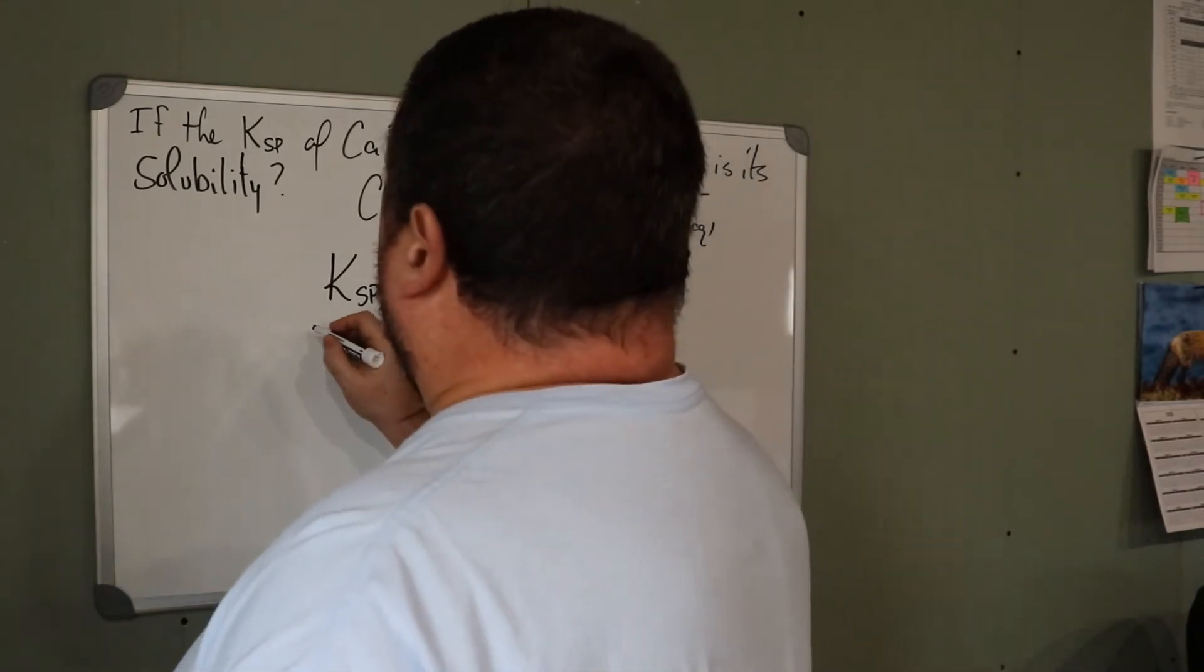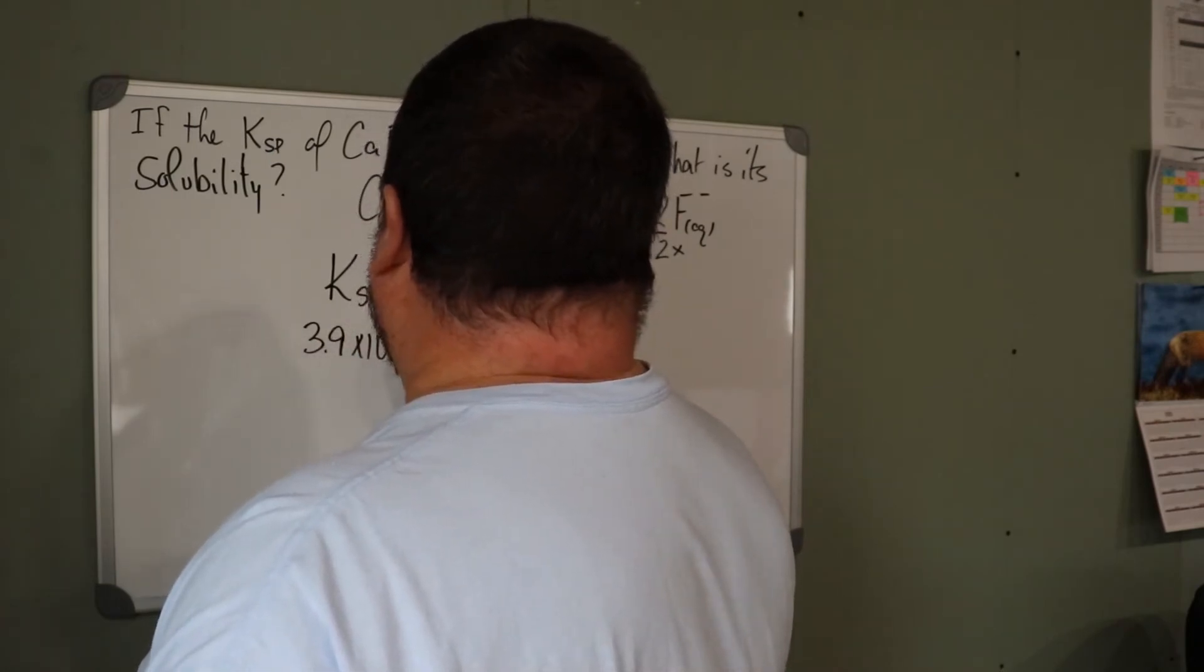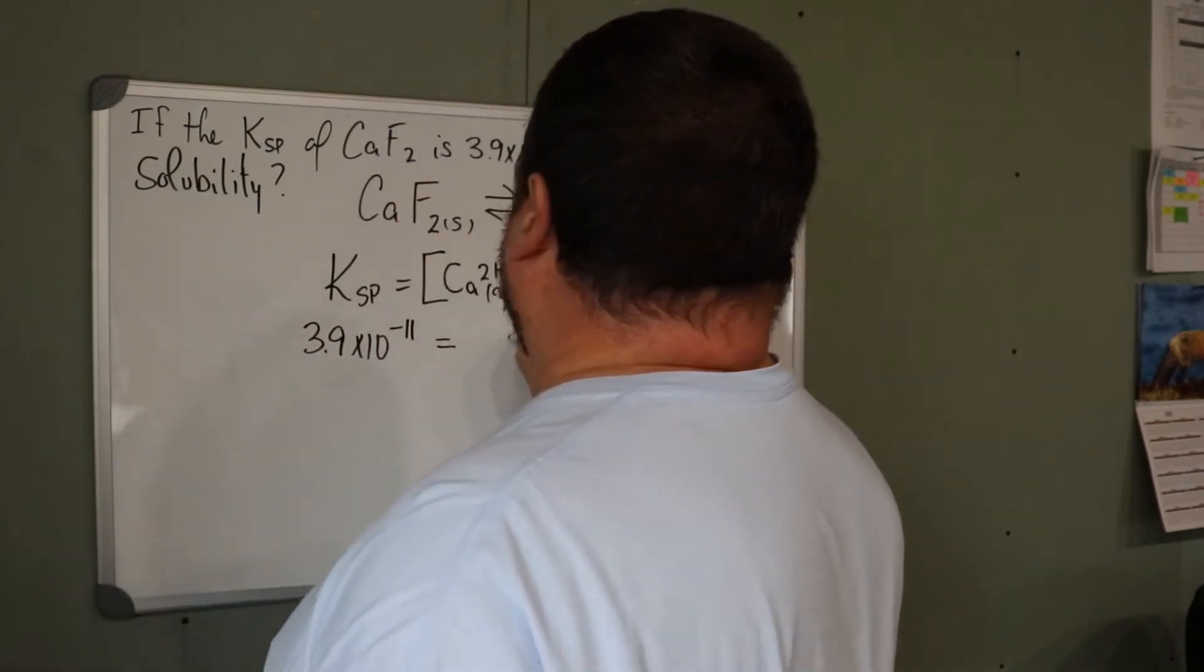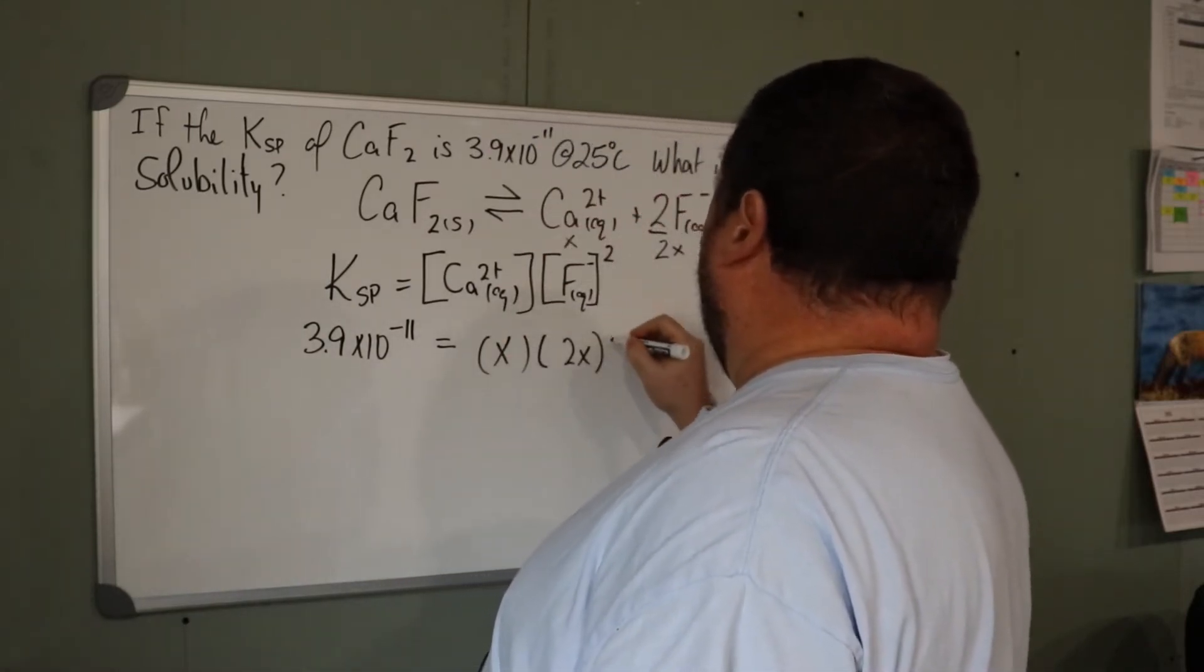So now if we fill in our values, 3.9 times 10 to the -11 is equal to X times 2X. And it's squared.